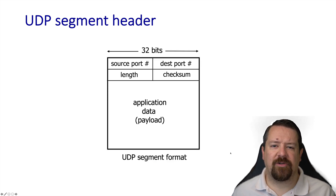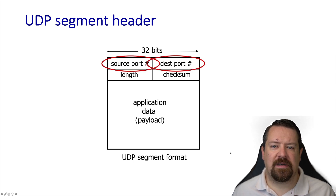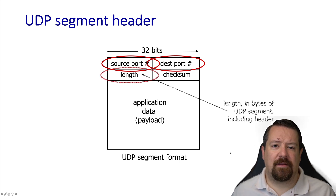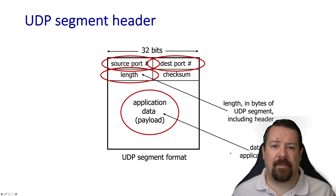The UDP segment header is quite simple with only four fields. The source and destination port are used for multiplexing and demultiplexing, as we've talked about in the previous video. Then it specifies the length of the entire segment, header included. It has the checksum, and it has the payload, which is the message from the application.